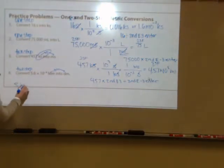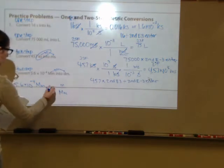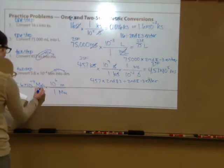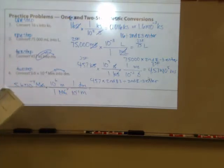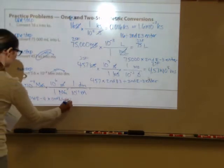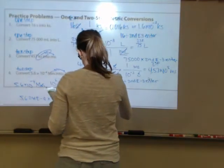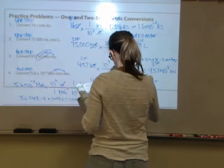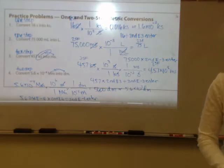Number four: 5.6 × 10⁻⁴ megameters to decimeters — two-step. Megameters on the diagonal, meters on top, one next to mega, 10⁶ next to meters. Then convert meters to decimeters: one next to deci, deci is 10⁻¹. Calculator: 5.6 × 2nd EE negative 4 × 2nd EE 6 ÷ 2nd EE negative 1 = 5,600 decimeters or 5.6 × 10³ decimeters. Two sig figs in, two sig figs out.